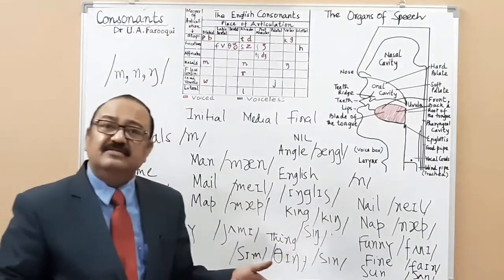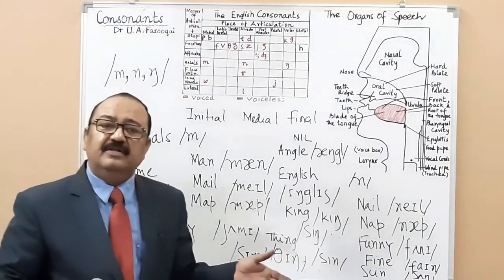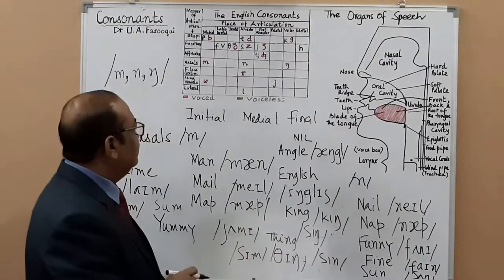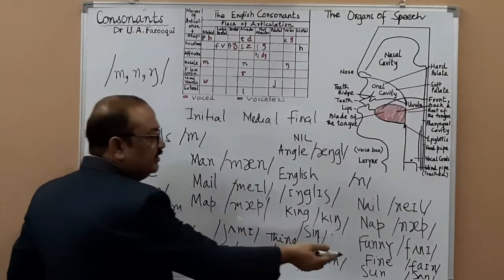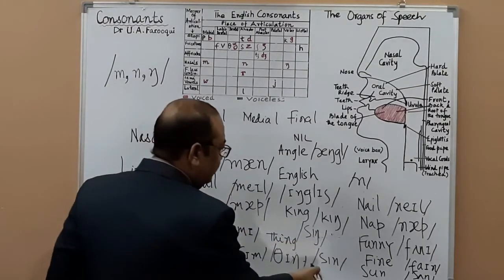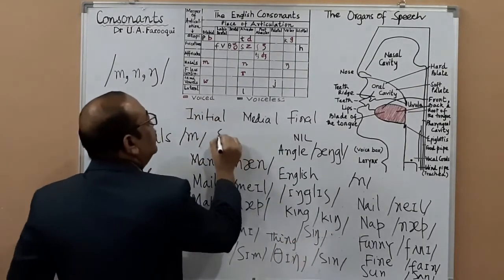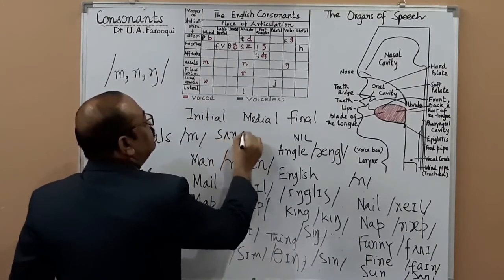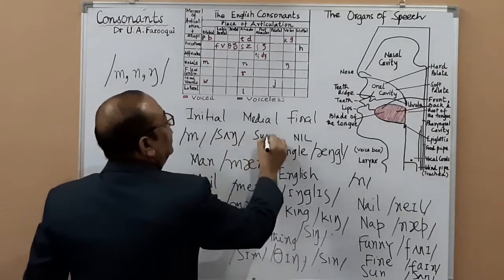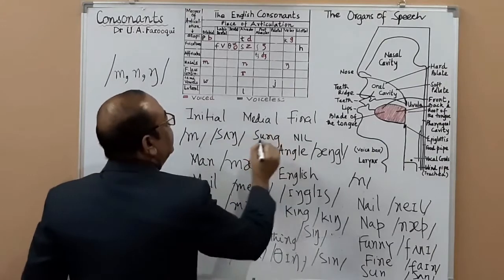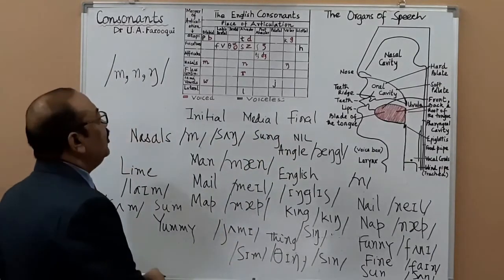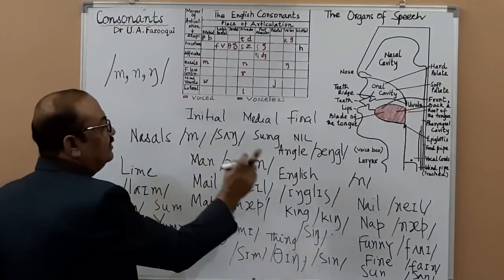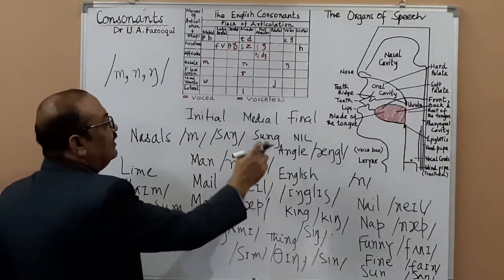Finally you can have 'sung' for example. How do you write 'sung'? You write it like this in English — 'sung'. So we have completed the nasals: /m/, /n/, and /ŋ/.